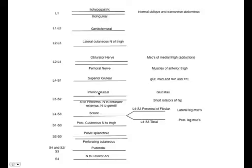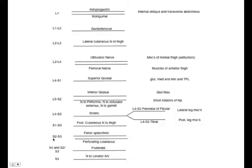L5-S2 forms both the inferior gluteal and the nerve to piriformis, nerve to obturator externus, and the nerve to gemelli. The inferior gluteal innervates the glute max. The nerves to piriformis, obturator externus, and gemelli can all be thought of as innervating the short rotators of the hip. L4-S3 forms the sciatic, which later splits into peroneal and fibular. L4-S2 forms the peroneal and fibular; L4-S3 forms the tibial. L4-S3 is the posterior cutaneous nerve to the thigh. S2-S3: pelvic splanchnic and perforating cutaneous. S4 and S2-S3: pudendal. S4: nerve to the levator ani.